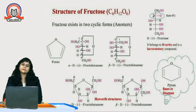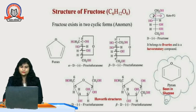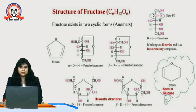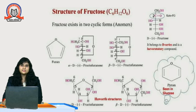Now, the structure of fructose. We have already seen that glucose and fructose both have the same molecular formula, C6H12O6. Fructose exists in two cyclic forms, as shown here. Fructose shows the presence of a keto group — a C=O group attached between two carbons, CH2OH and CHOH. These are the differences between the glucose and fructose structures: glucose has an aldehyde group while fructose has a keto group.